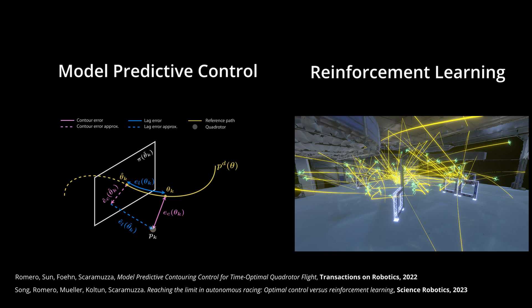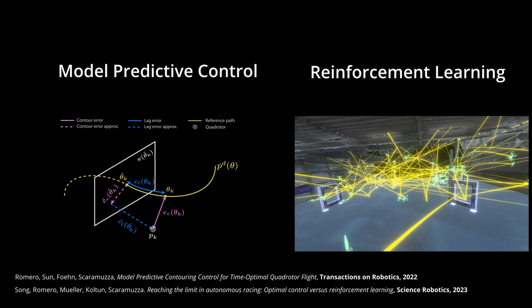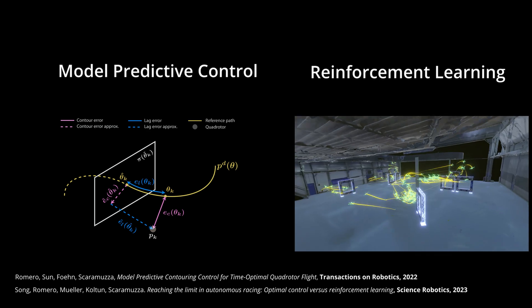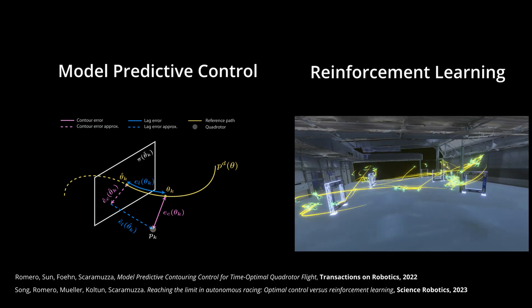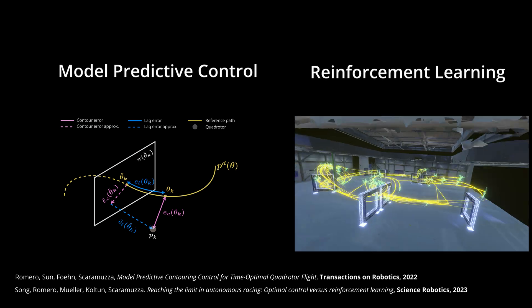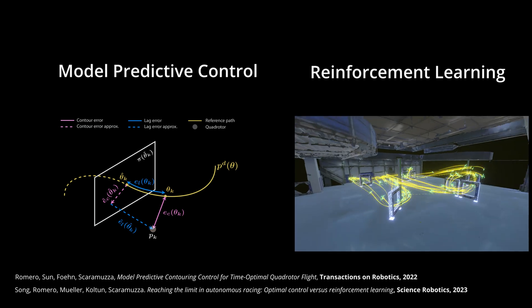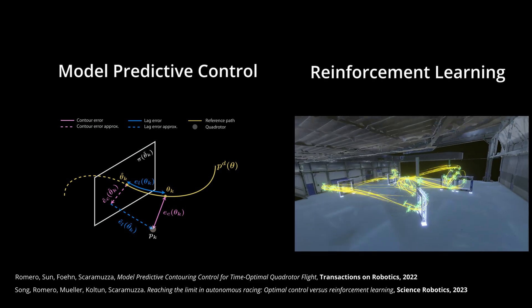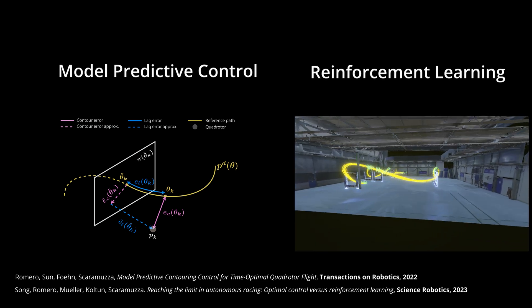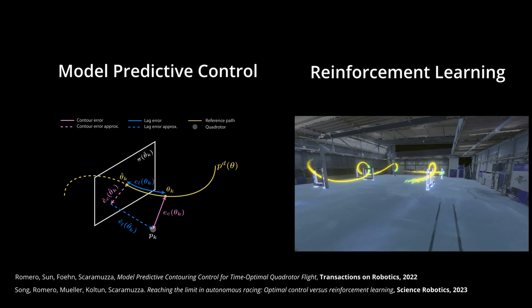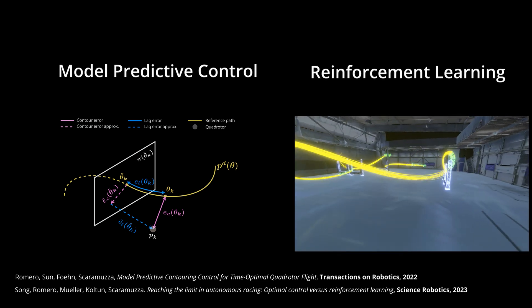Despite its success, model predictive control often requires intensive task-specific engineering and hand-tuning. On the other hand, reinforcement learning architectures require extensive data collection and lack interpretability and safety.